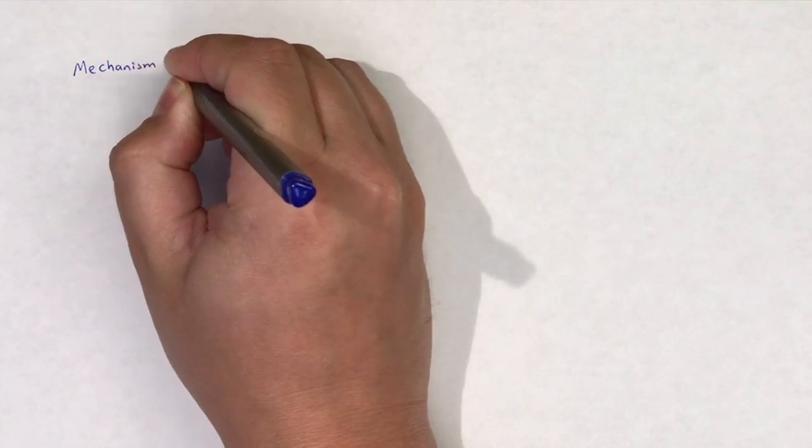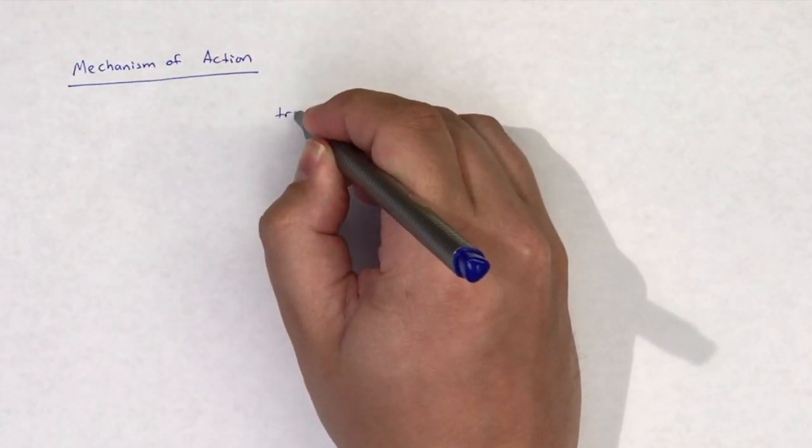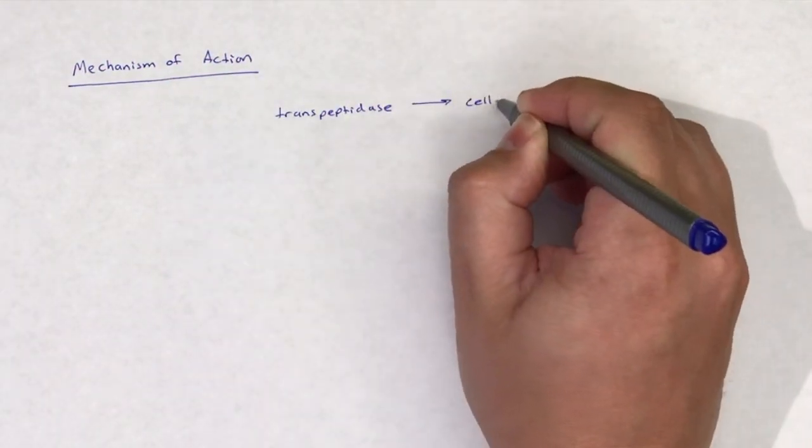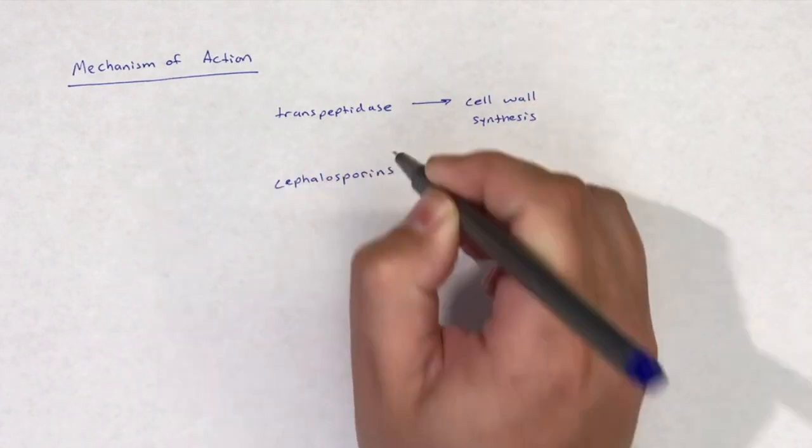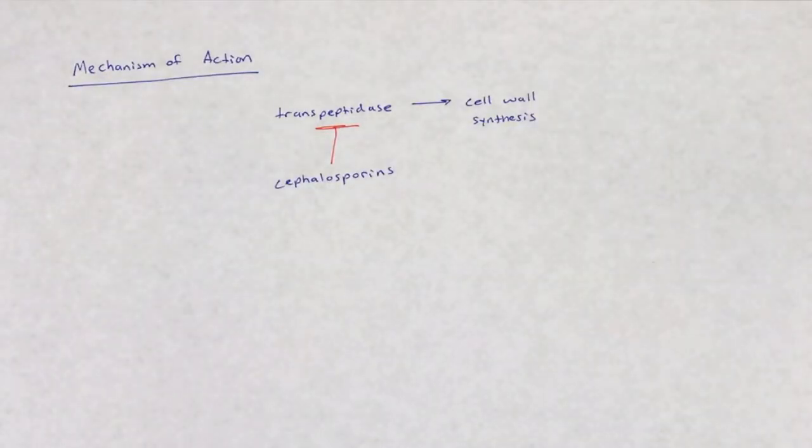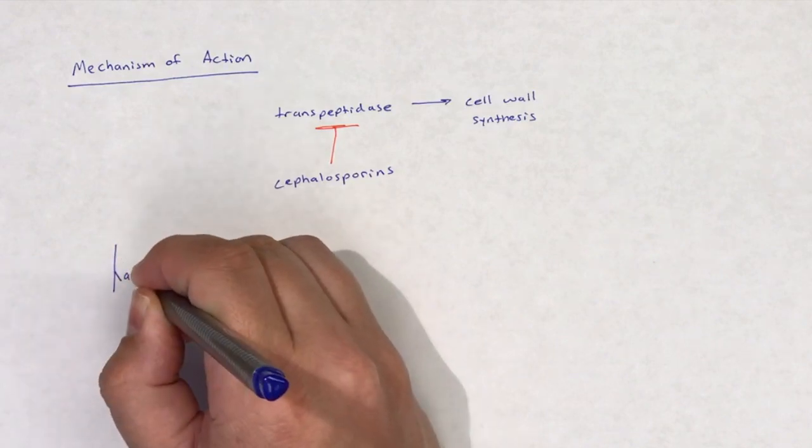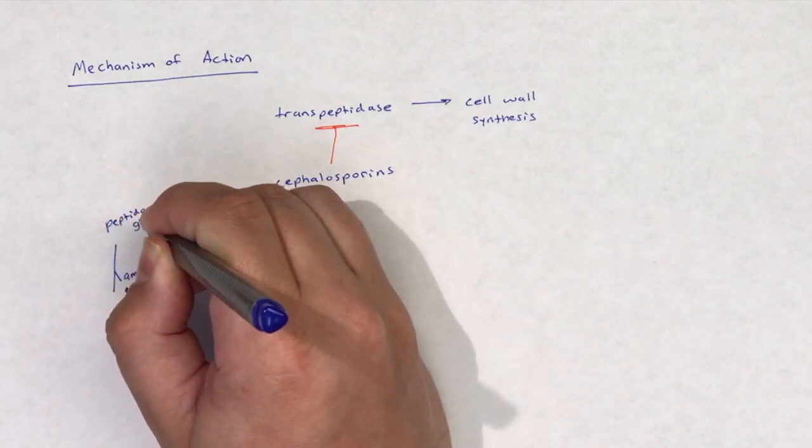The cephalosporins work very similarly to penicillins and have an almost identical mechanism of action. Cephalosporins kill bacteria by interfering with the transpeptidation reaction and inhibiting the formation of the cell wall.